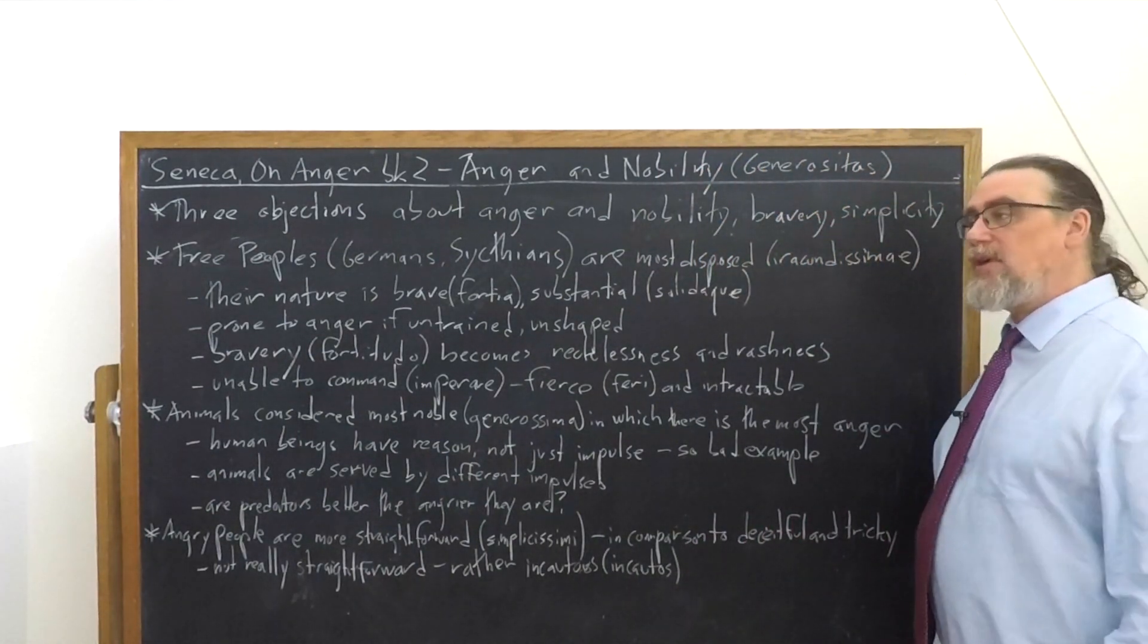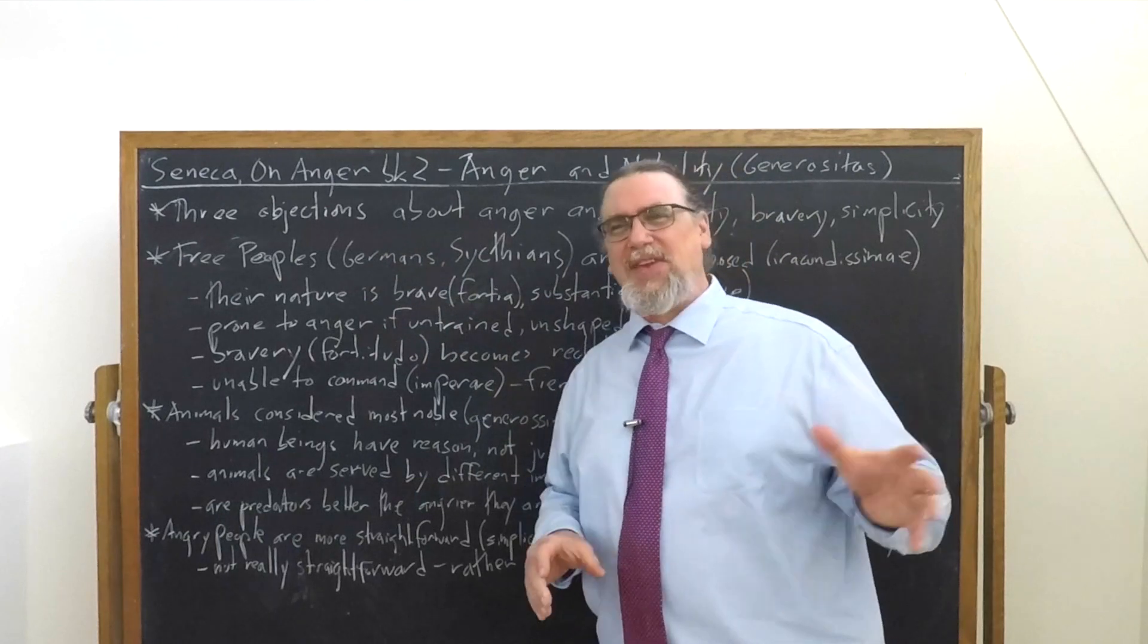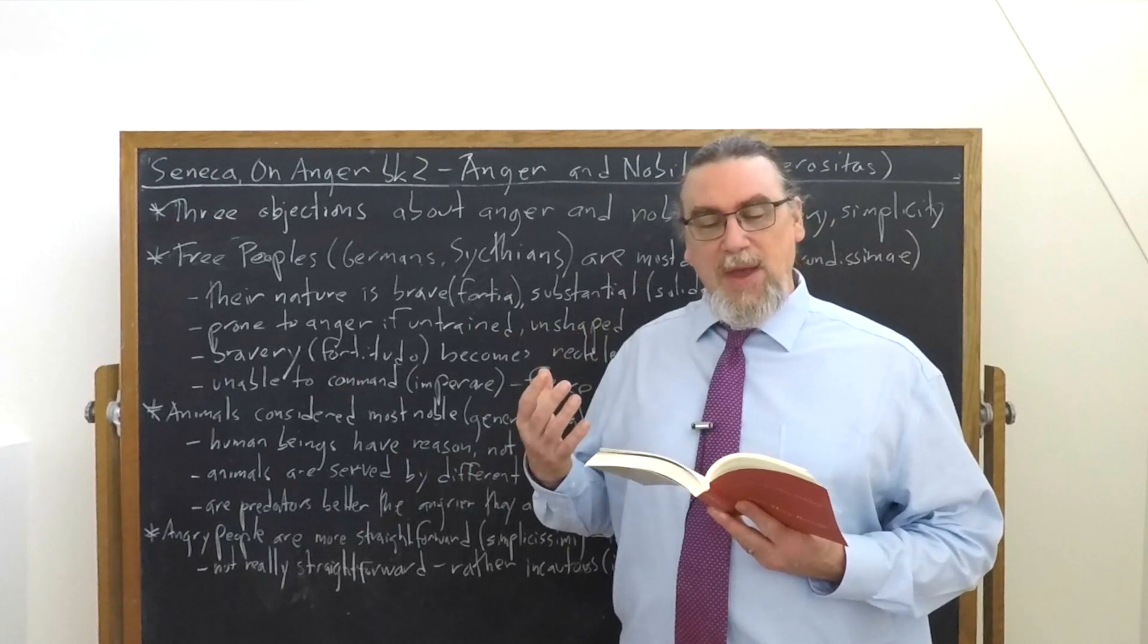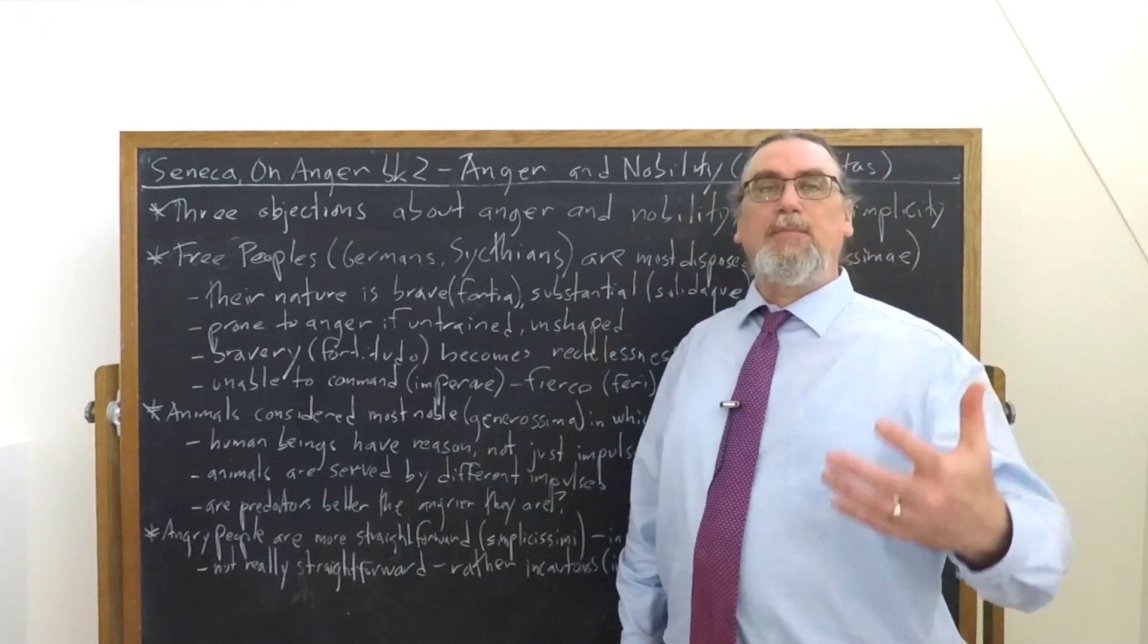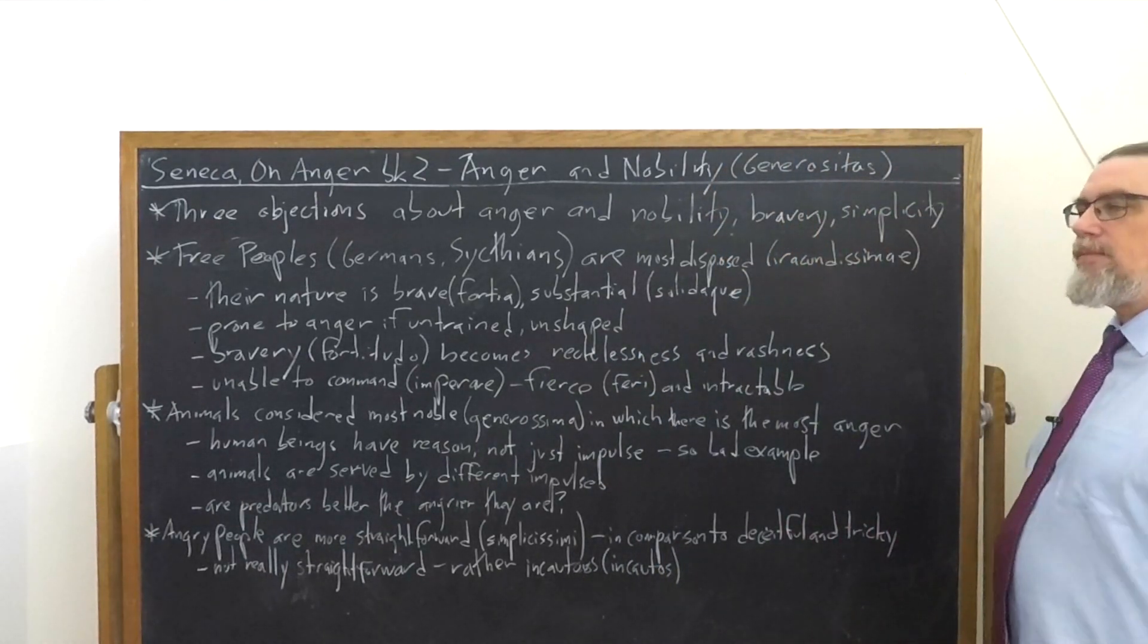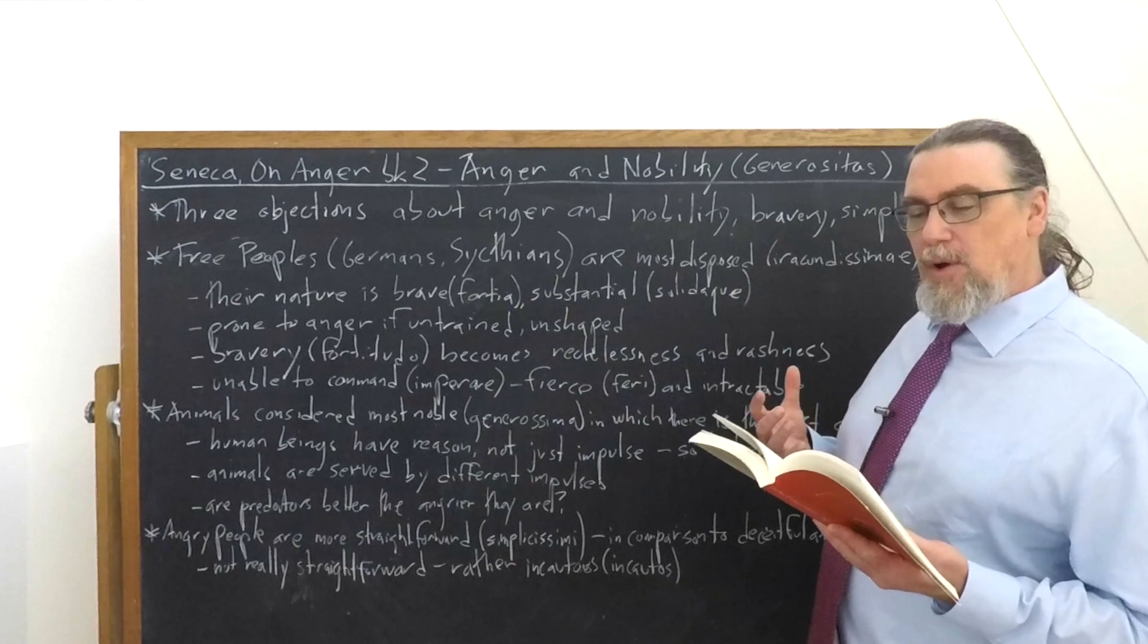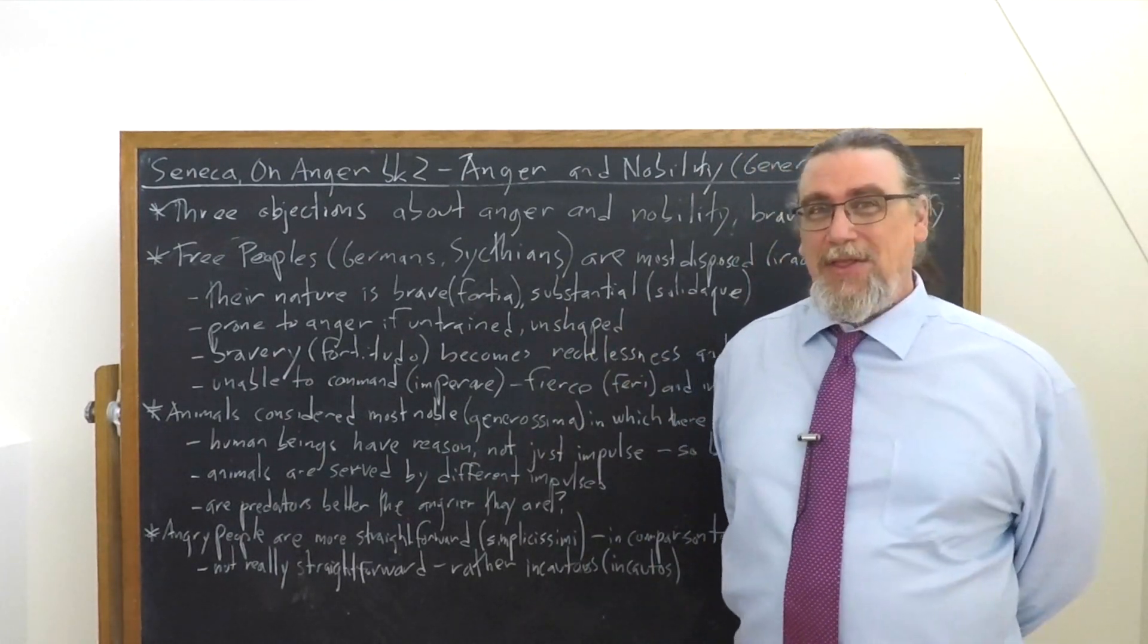The last one that he brings up is another thing that we often see. Well, at least the angry people, you know where you stand with them. They don't BS around. They don't conceal. They tell you what they think. A lot of people see that as a good thing, obviously until it's turned against them. And so he says wrathful people are considered the most straightforward of all people. Now straightforward is simplicissimi, the simple, it's above board. You know exactly what you're getting. And Seneca says, well, sure, but not per se, but rather by comparison to the deceitful and the tricky people. They appear straightforward because they act without concealment. And the reason they act without concealment is because they can't even manage to conceal or rein in their passion of anger.